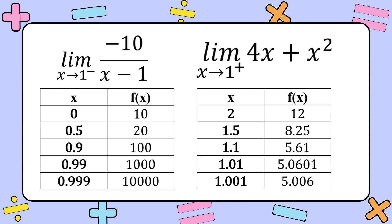For the right-hand limit using 4x plus x squared, the x values are 2, 1.5, 1.1, 1.01, and 1.001, with f of x values of 12, 8.25, 5.61, 5.0601, and 5.006 respectively. The left-hand limit of negative 10 over x minus 1 increases toward positive infinity as x approaches 1 from the left, while the right-hand limit approaches 5.